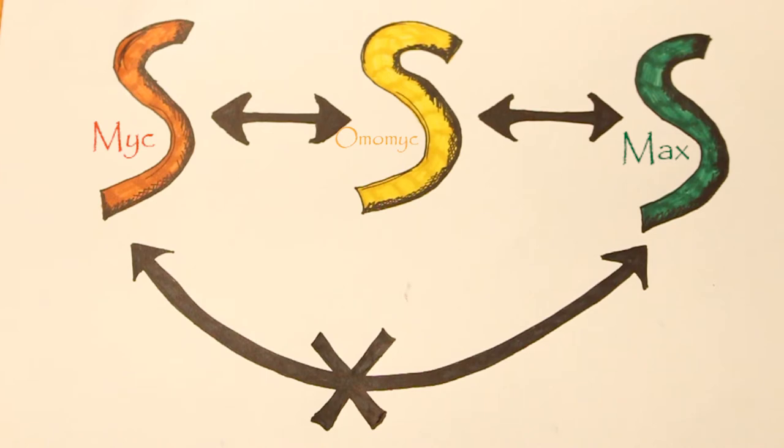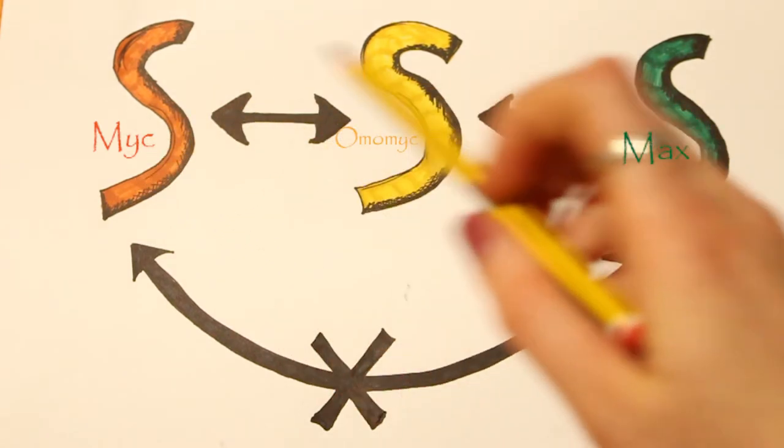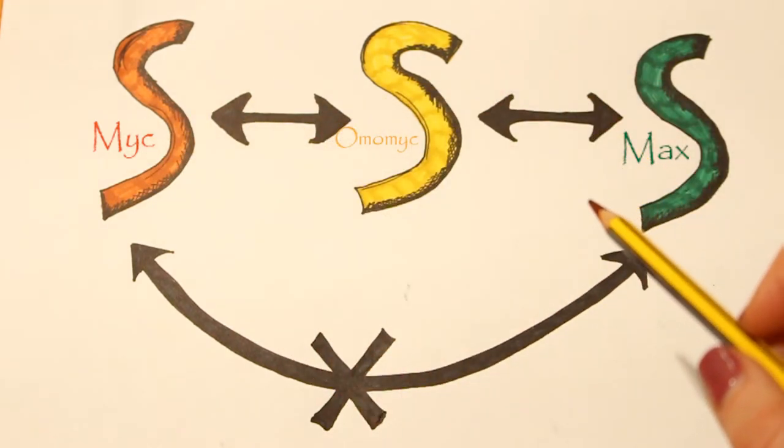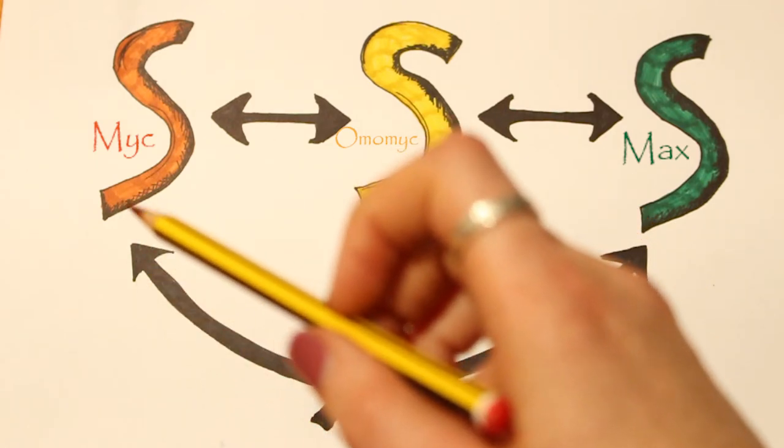One possibility is that if omamic binds both myc and max, this means it can stop myc and max from coming together.